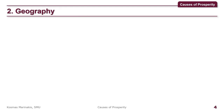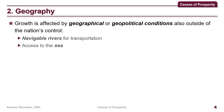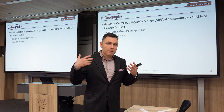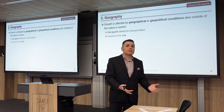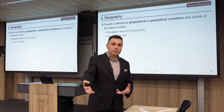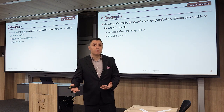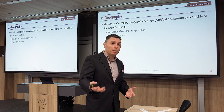The second factor is geography. Growth is also affected by geographical and geopolitical conditions, which are also outside of a nation's control — like navigable rivers for transportation or access to the sea. Most major cities historically were built either next to a large body of water or along navigable rivers, which helped trade and feeding larger populations.